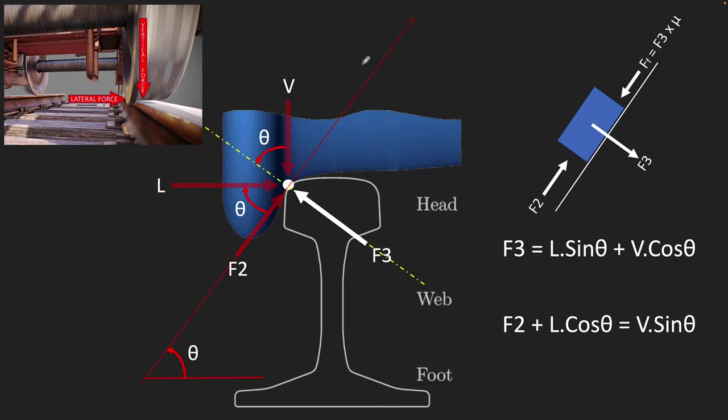Similarly, if we look at the other axis, which is the axis on which the train is trying to climb the rail, and if we try to equate all the forces on the axis, your F2 plus the lateral force component, which is L cos theta, will be equal to V sin theta. So that's the equation of forces on this axis.